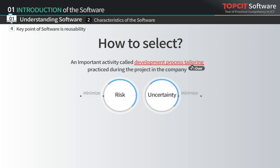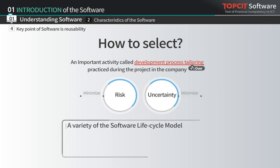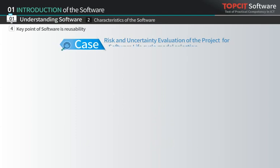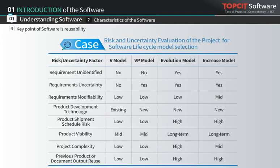The selected model among various lifecycle models can minimize risk or uncertainty in a project. There are V model, V with prototype model, evolutionary model, and incremental model as typical examples. The selection of software lifecycle is critical to the success of the software project. Thus, considering potential risks such as requirements, technology, schedule, complexity, and reuse, it is recommended to select the most optimal lifecycle to address them.